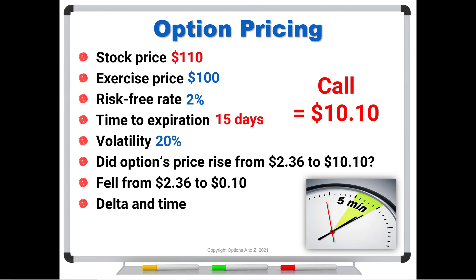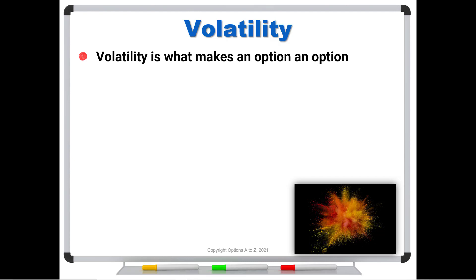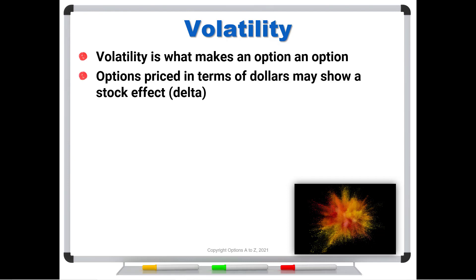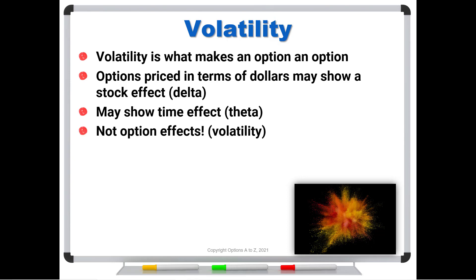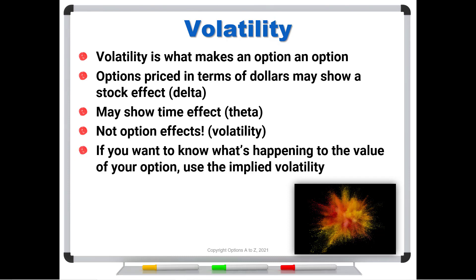I know it can be confusing, but that's why I keep drumming this into traders' heads. You've got to get out of the habit of looking at option prices in terms of dollars. There are certainly times that's applicable — finding gains and losses — but if you're trying to find out what's happening with your option, which is ultimately what you're trading, you always need to look at it in terms of volatility. Volatility is what makes an option an option. Options priced in dollars may show a stock effect (delta) or a time effect (theta), but neither of these are option effects or volatility effects. If you want to know what's happening to the value of your option, use the implied volatility as shown by the market — that gives you far more insight and allows you to make better decisions.